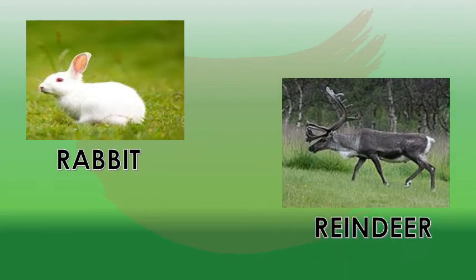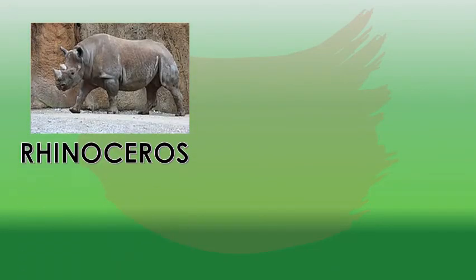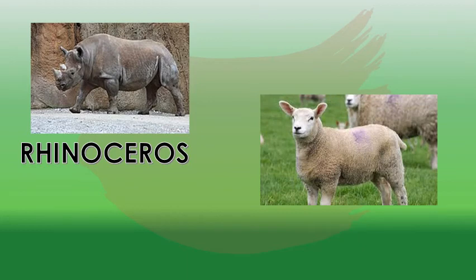What is this? This is reindeer. What is this? This is reindeer. What is this? This is rhinoceros. What is this? This is rhinoceros. Next picture is sheep. What is this? Sheep.